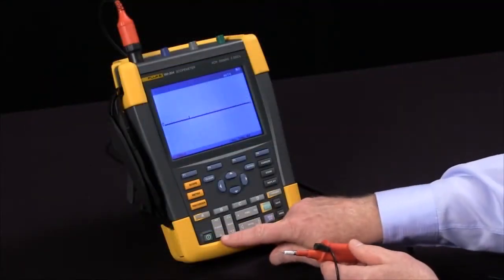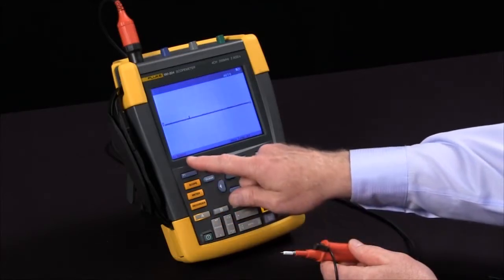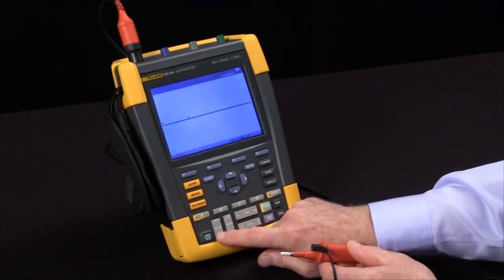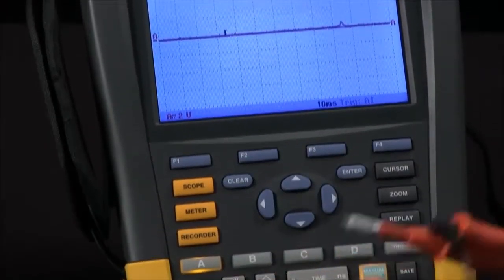Let's make some adjustments to my time base and my attenuator. I'm going to start by changing my volts per division to about two volts per division so I've got something I think will be about the right height.